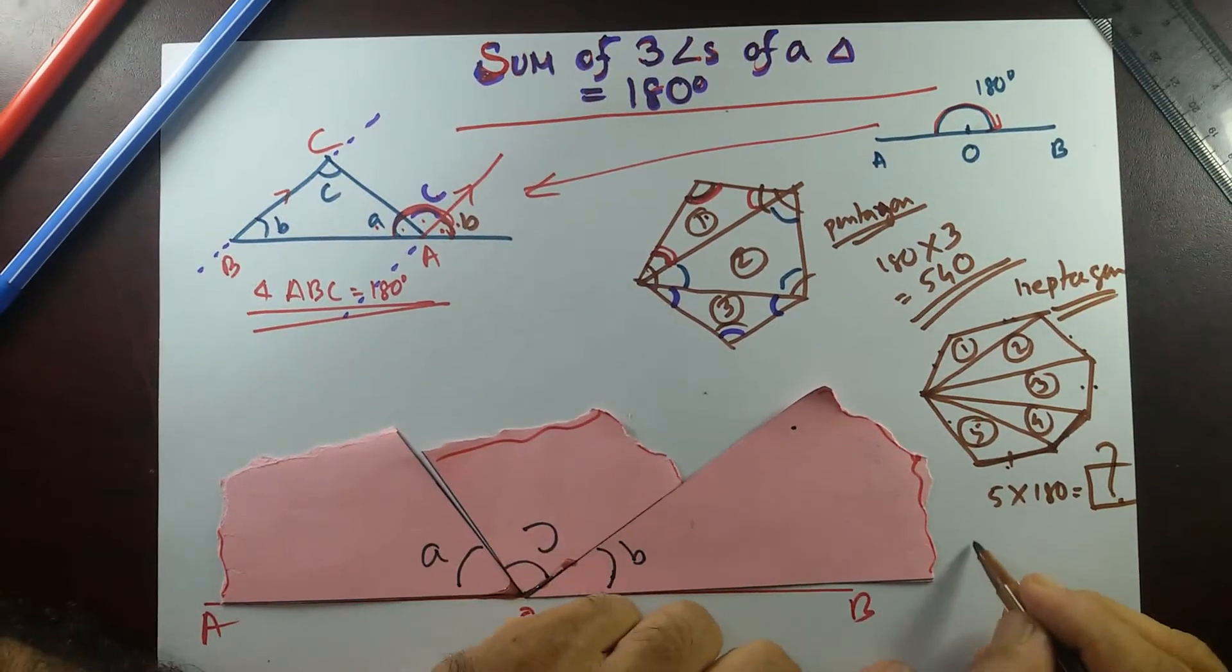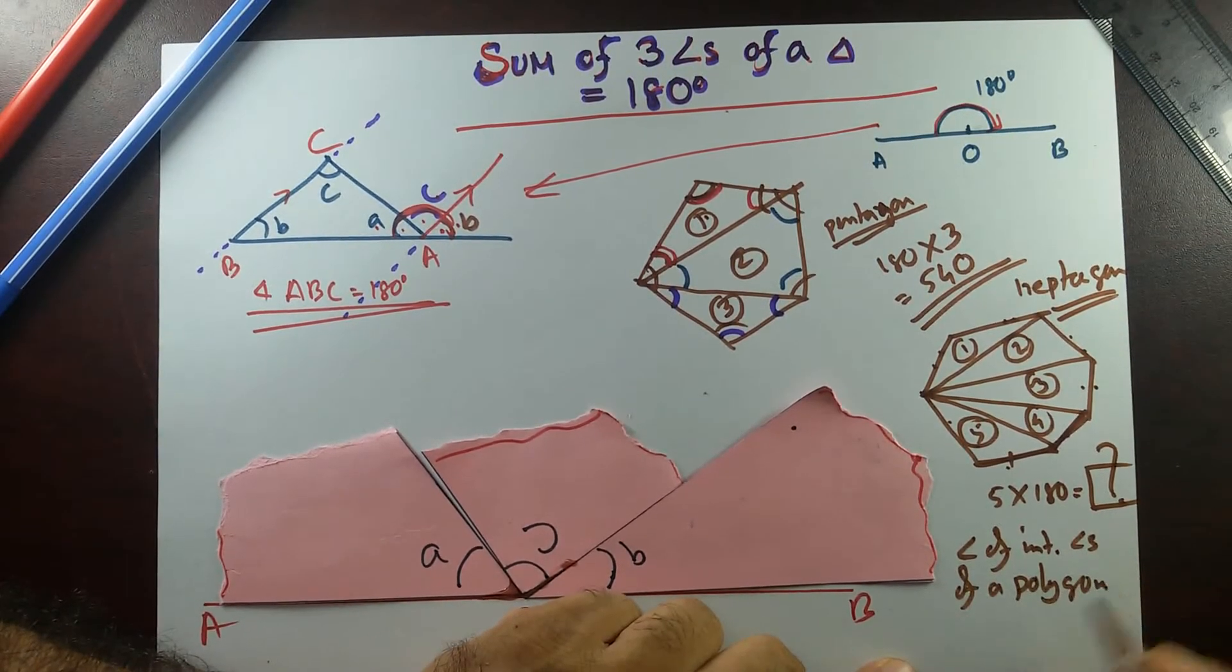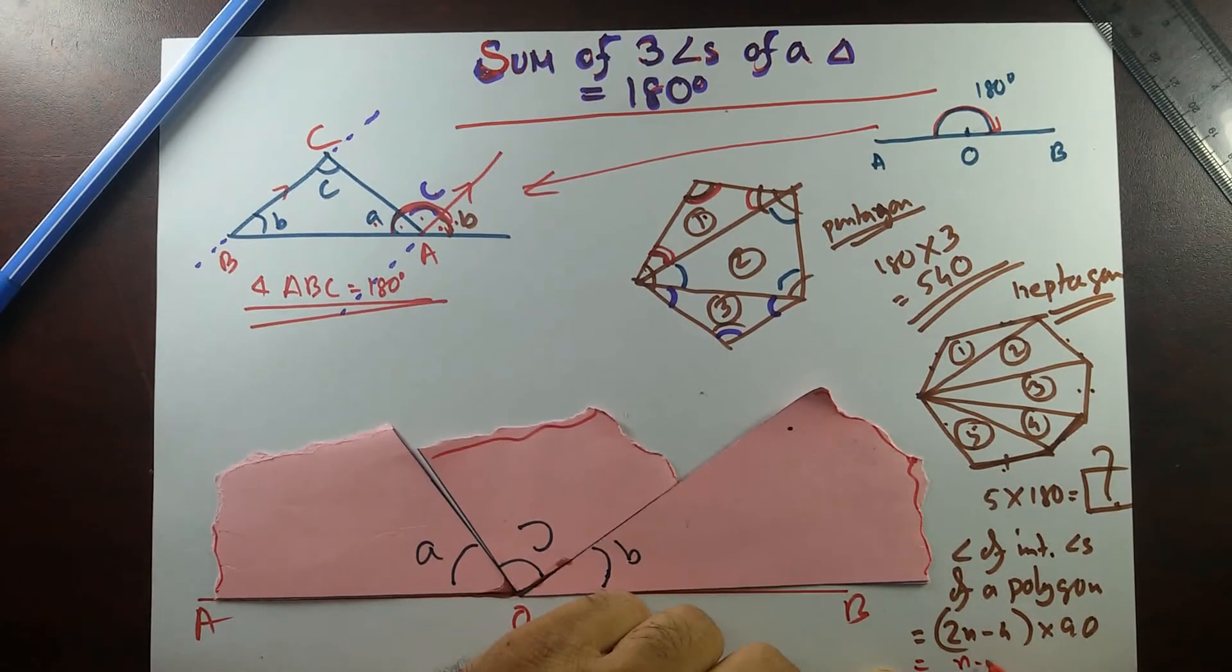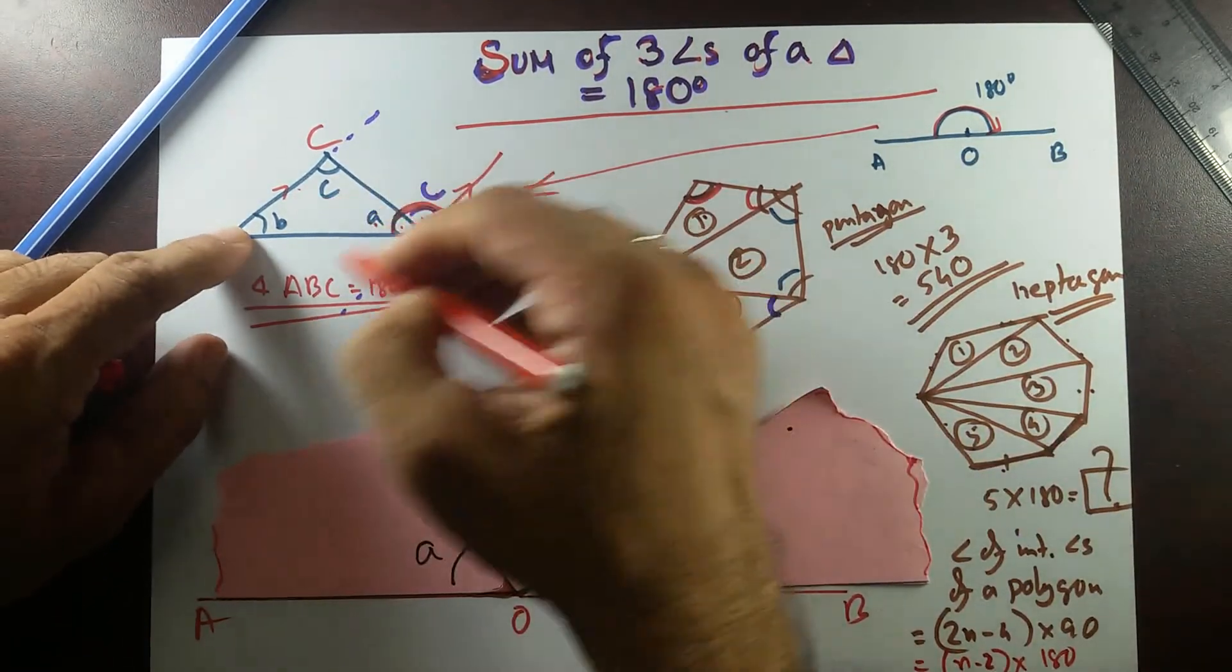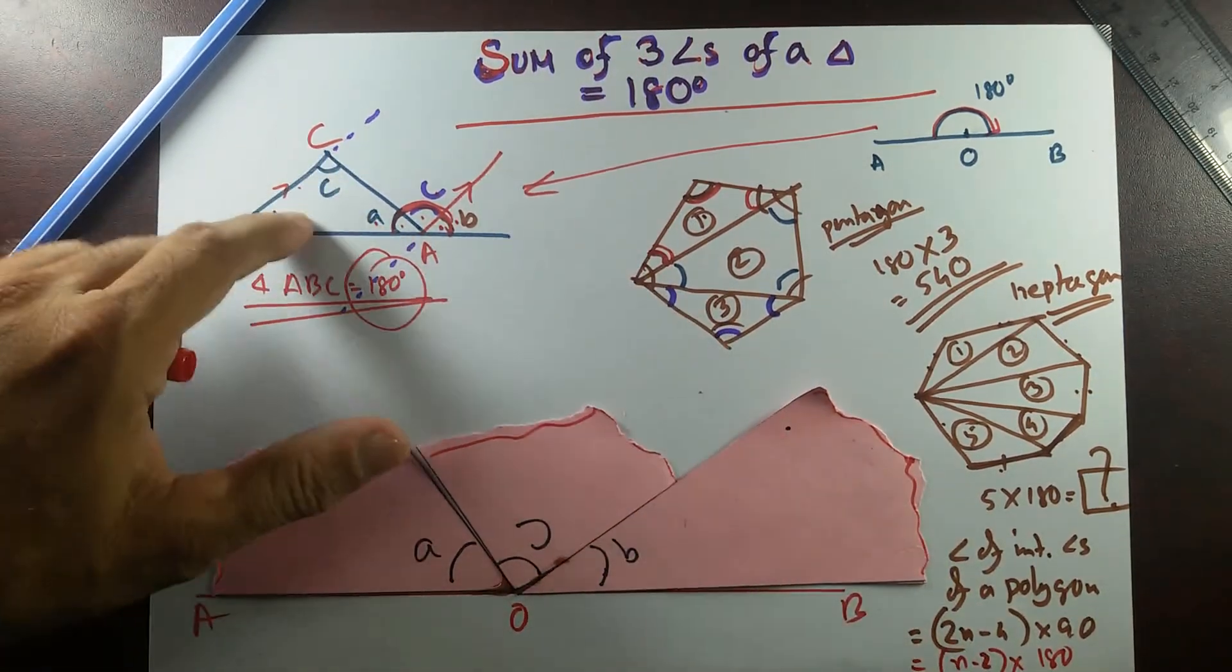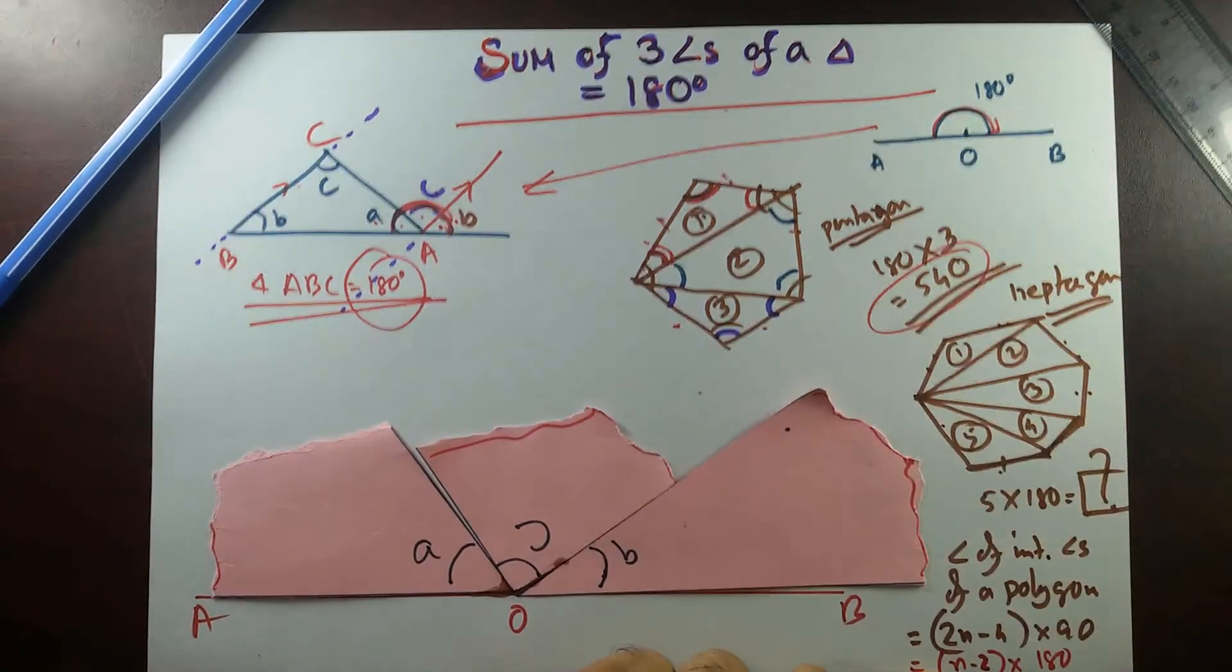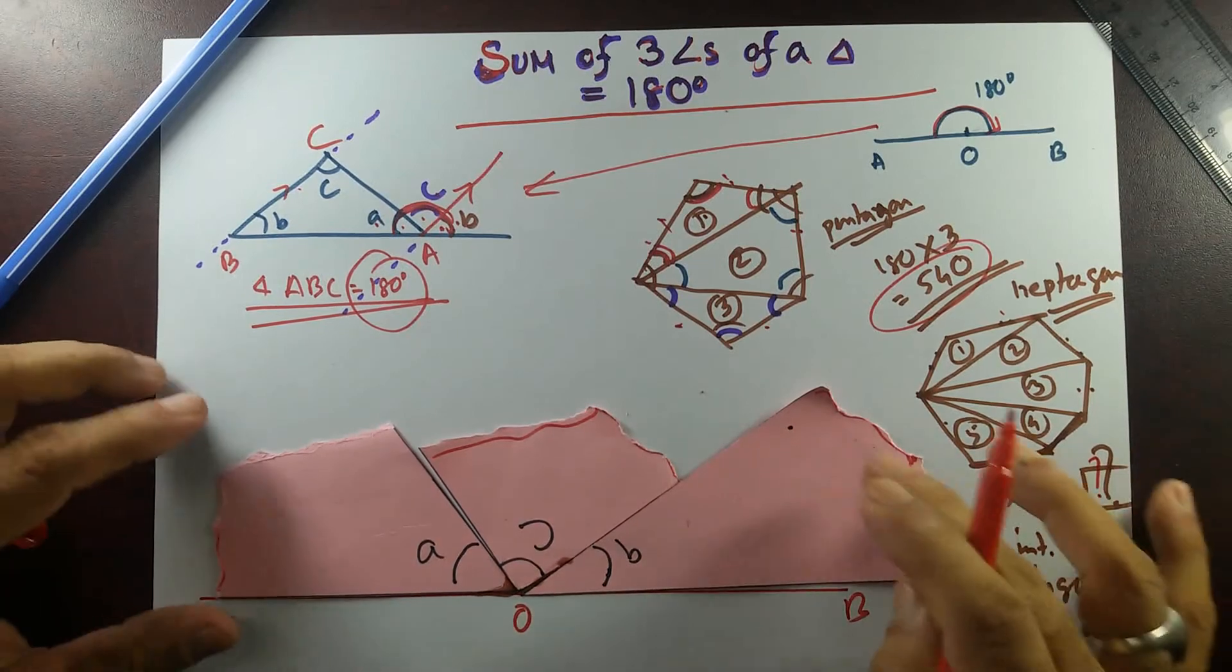Now there is a formula. You can use it. Sum of interior angles of a polygon. The formula goes like that: 2N minus 4 times 90. Or sometimes some people take this 2 common and make this 1 N minus 2, and this 2 multiply by that 180. So there was 3 sides of this triangle. So if you put 3 over here, 3 minus 2 is 1, 1 times 180 is 180, sum of 3 angles of a triangle. Now there was 5 sides. So if you put 5, 5 minus 2 is 3, 3 times 180 is 540. And over here you have 7, 7 minus 2 is 5, 5 times 180 is whatever that comes. This is what happens.